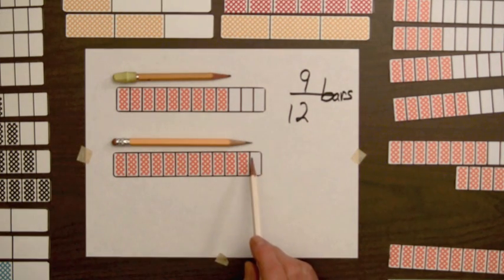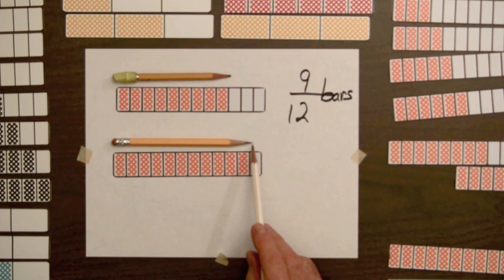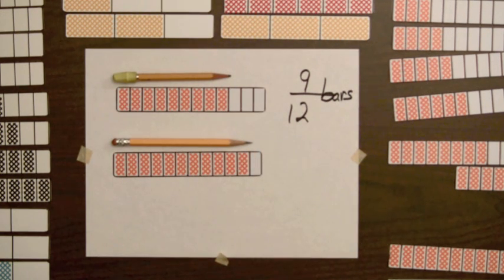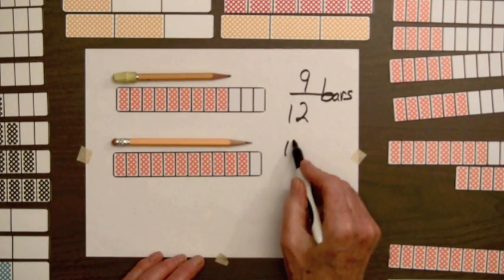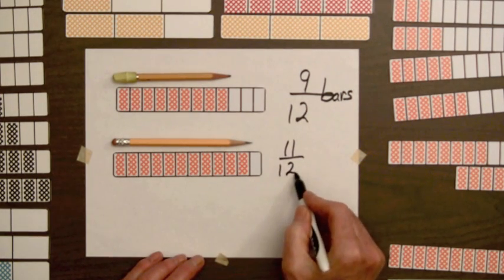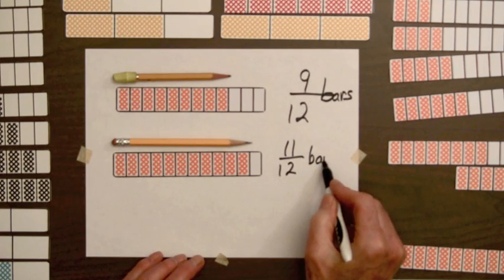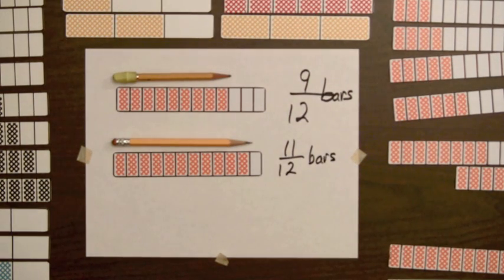Sometimes we'll have to do a little rounding here. This is a little bit more than 11 out of 12, but you can see that it's less than half of the next space. So, we're going to say that the length of this pencil is going to be 11 over 12 bars. Almost a whole bar.